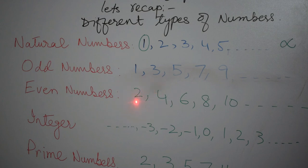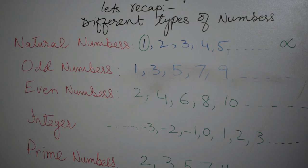Here you can see that two is divisible by two, and four is divisible by two, six is divisible by two, eight is divisible by two and so on. Next comes the integers. Integers are any of the negative or positive whole numbers including zero. You can see it on the number line and these are coming from the negative side and going towards the positive side and zero is also included.